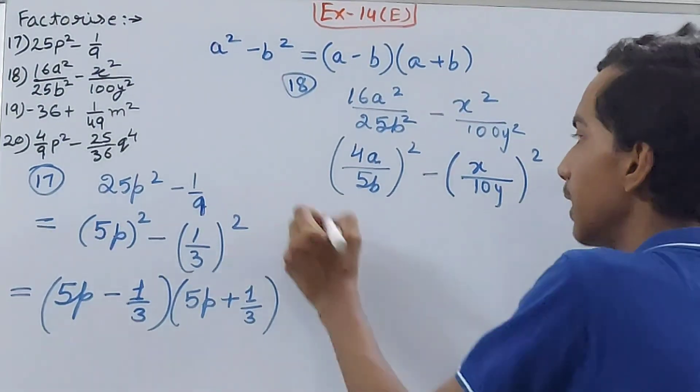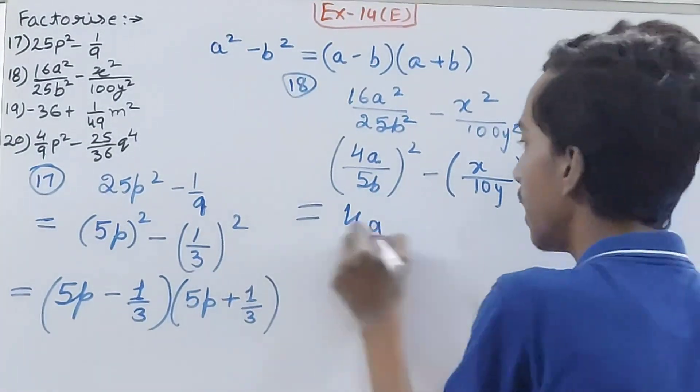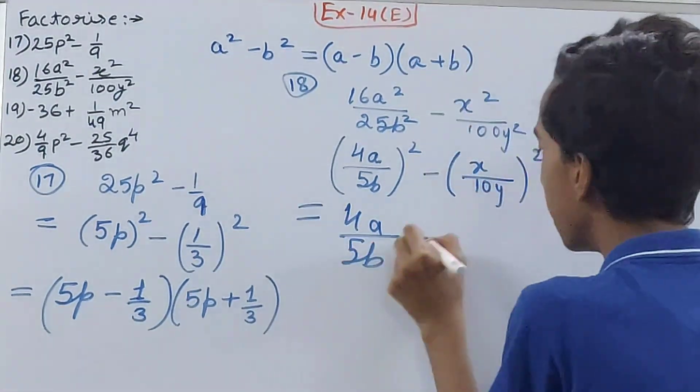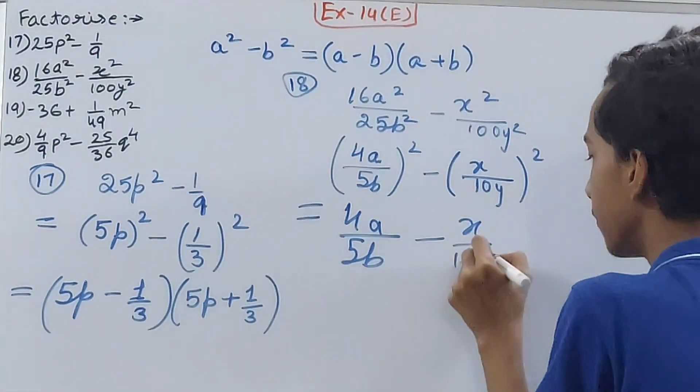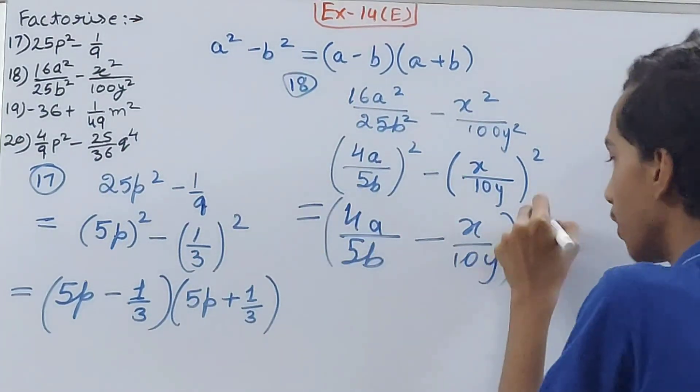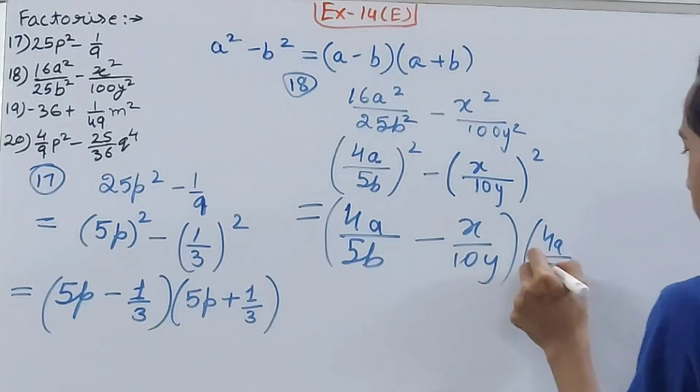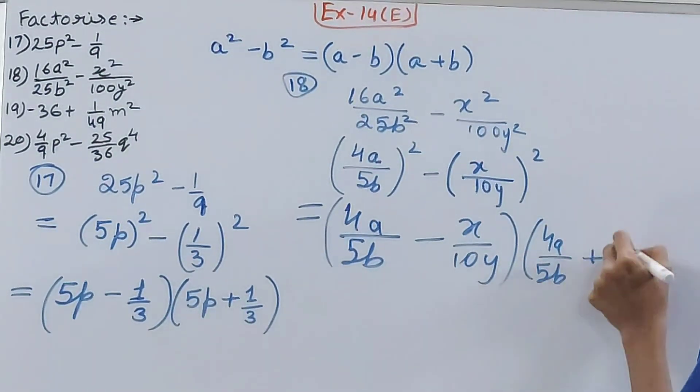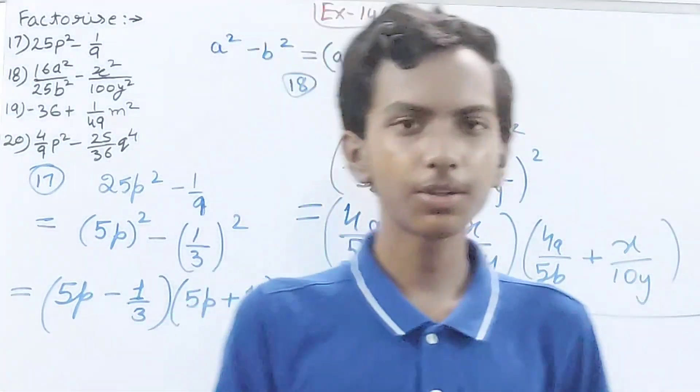So this is what you have. Now solve it: (4a/5b - x/10y)(4a/5b + x/10y). That becomes the answer. Now let's move on to the next question.